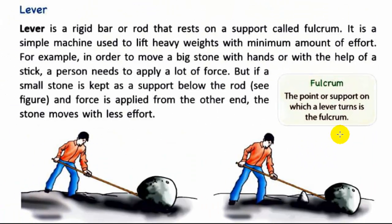Let's see the first simple machine: Lever. A lever is a rigid bar or rod that rests on a support called a fulcrum. It is a simple machine used to lift heavy weights with a minimum amount of effort.